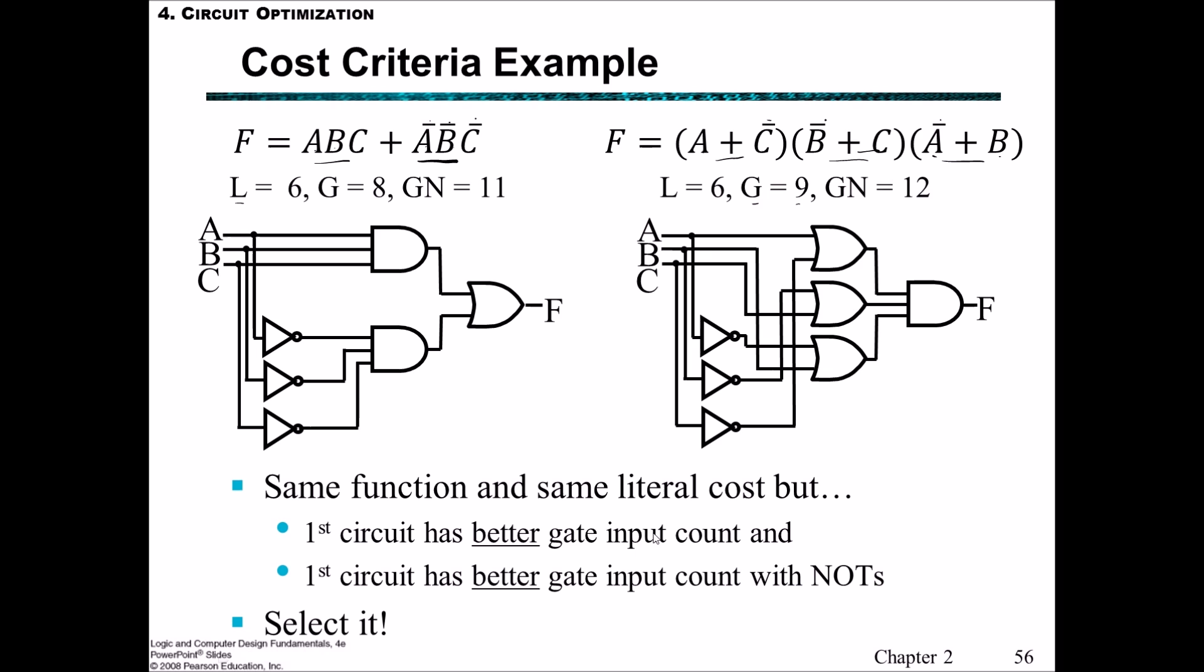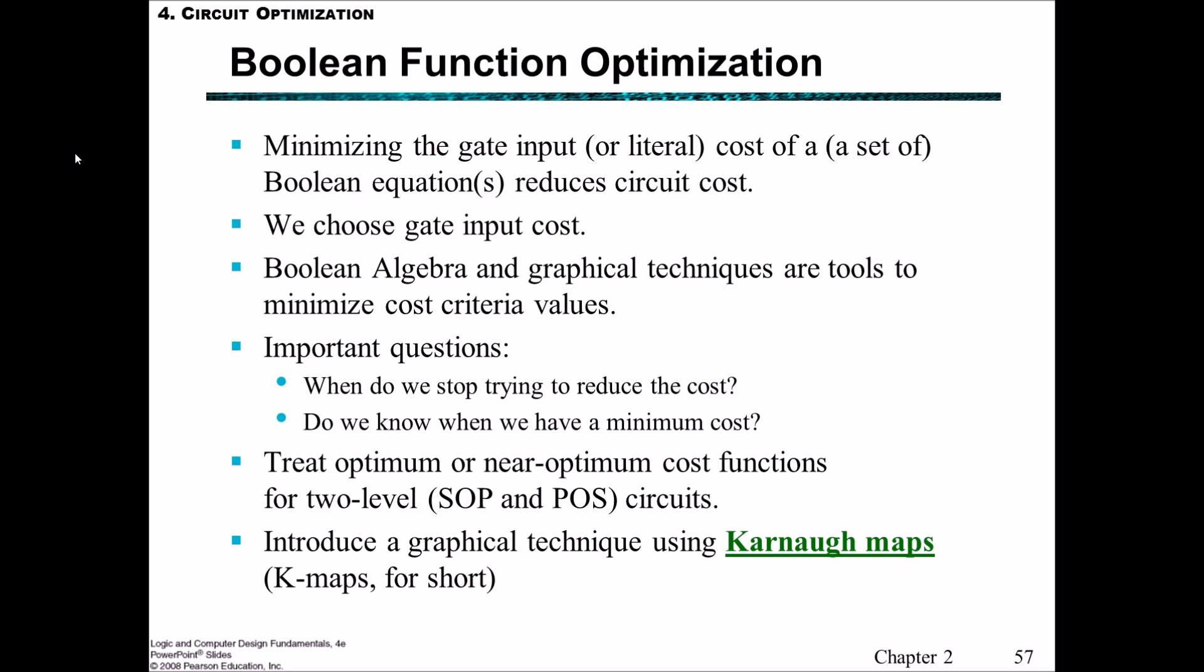In terms of Boolean function optimization, when we minimize the gate input or the literal cost, then we also reduce the circuit cost. And the reason why we want to reduce the gate input cost is because it's currently a good measure for contemporary logic implementations. Since the gate input cost is usually proportional to the transistors and the wires used in implementing the logic circuit, the representation of gate inputs is particularly important when we're measuring circuits that have more than two levels. Because typically, as the number of levels increases, then the literal costs represent a smaller portion of the actual circuit cost. Because in general, more and more gates will have no inputs from outside the circuit itself.